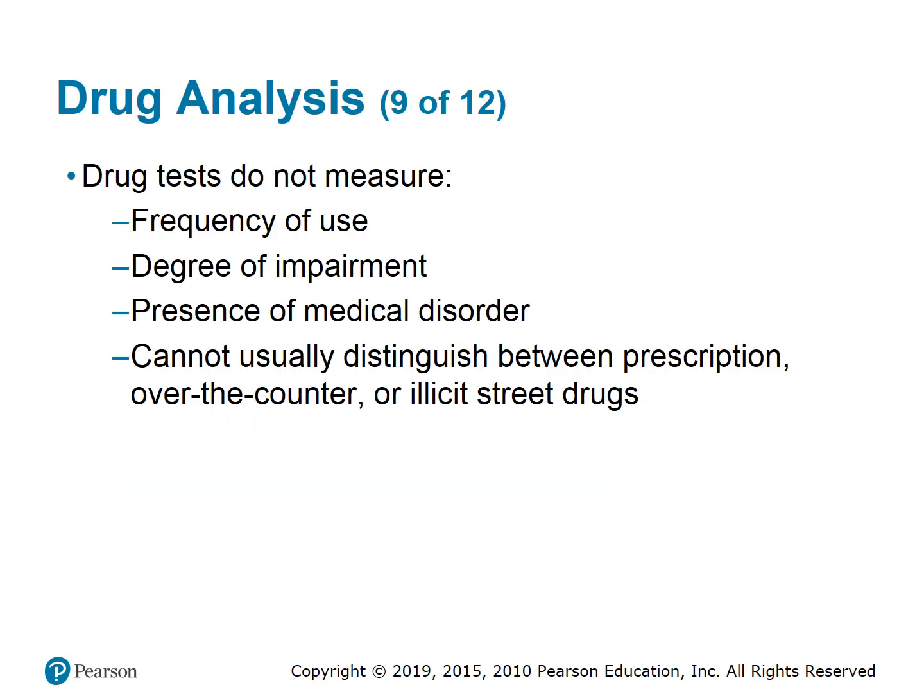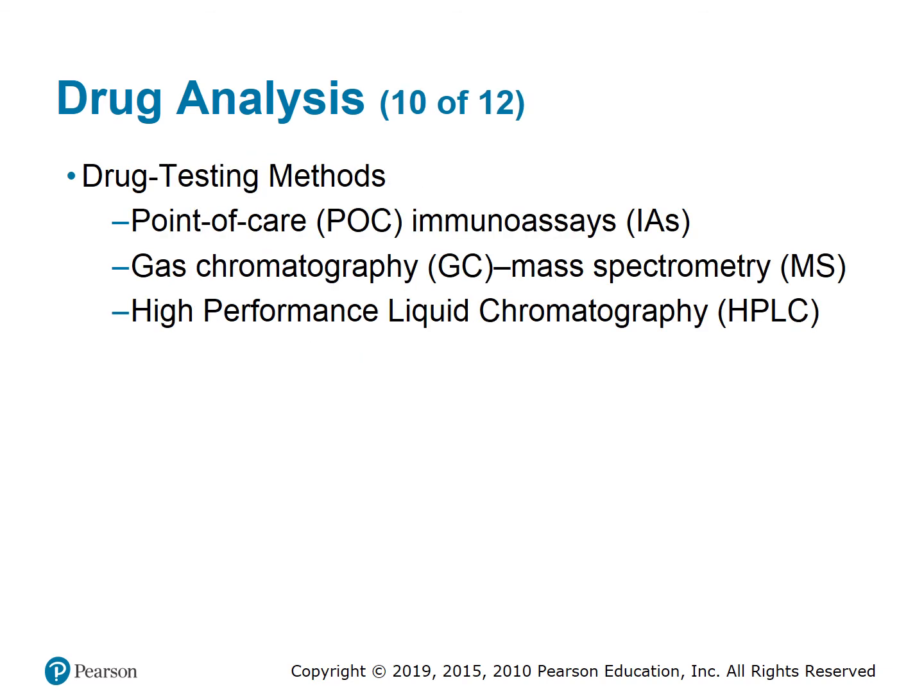Drug tests do not measure frequency of use, degree of impairment, or presence of a medical disorder, and cannot usually distinguish between prescription, over-the-counter, or illicit street drugs. Drug testing methods include point-of-care immunoassays, gas chromatography (GC), mass spectrometry (MS), and high-performance liquid chromatography (HPLC).